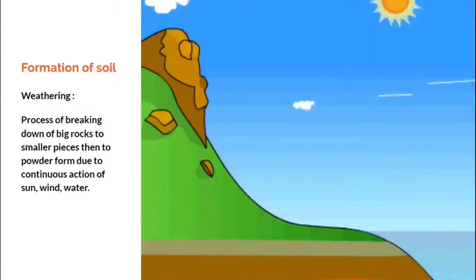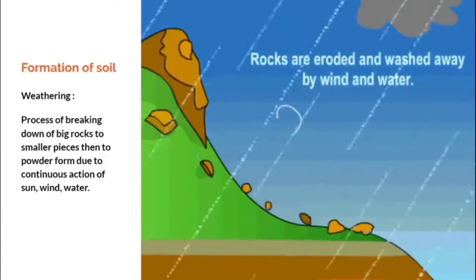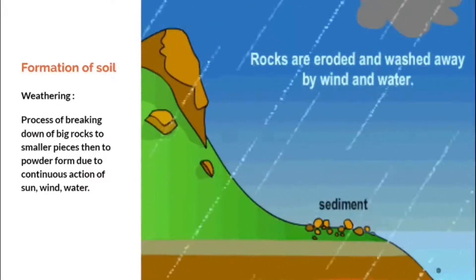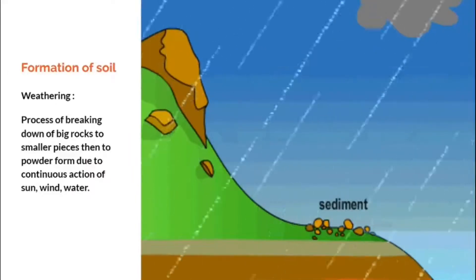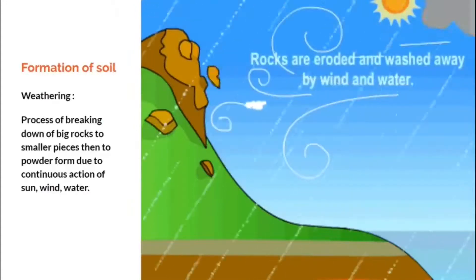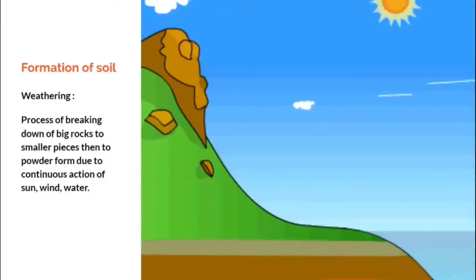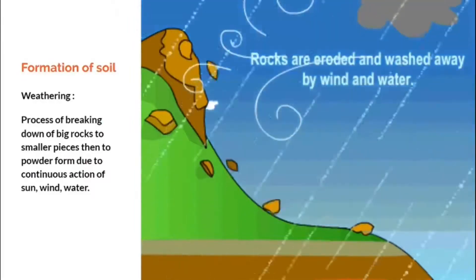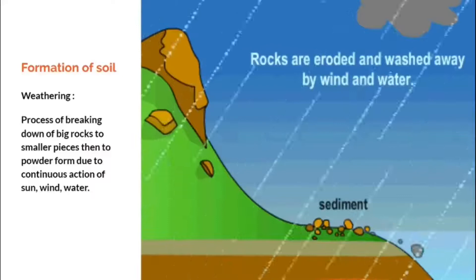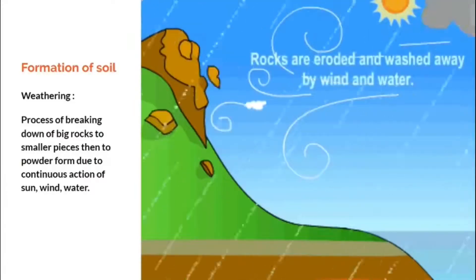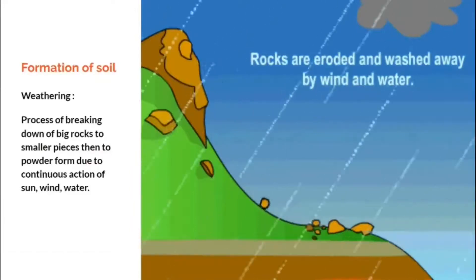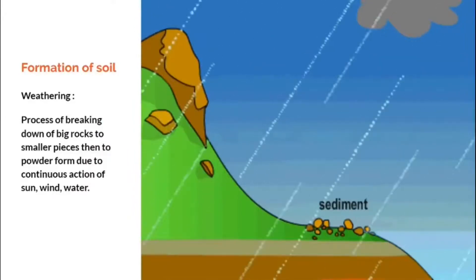The earth was formed millions of years ago and was just covered with rocks. As the years passed, these rocks broke down into smaller pieces due to the action of heat of the sun, air, and water from the rain. These smaller pieces of rocks got mixed up with the dead and decayed remains of plants and animals, and changed into soil after millions of years.